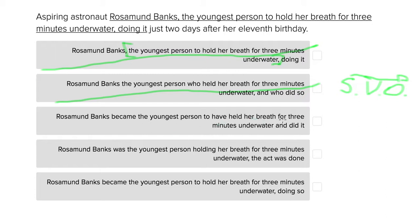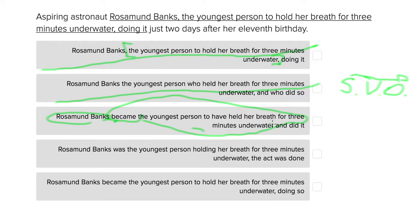The third option: 'Rosamund Banks became the youngest person to have held her breath for three minutes underwater and did it just two days after her 11th birthday.' Here we have a full sentence — Rosamund Banks is the subject, and 'became the youngest person to have held her breath for three minutes underwater' is the entire action she did. But that's already a full sentence, and 'did it just two days after her 11th birthday' could be a separate sentence. So this is a run-on, which is why this sentence doesn't work.